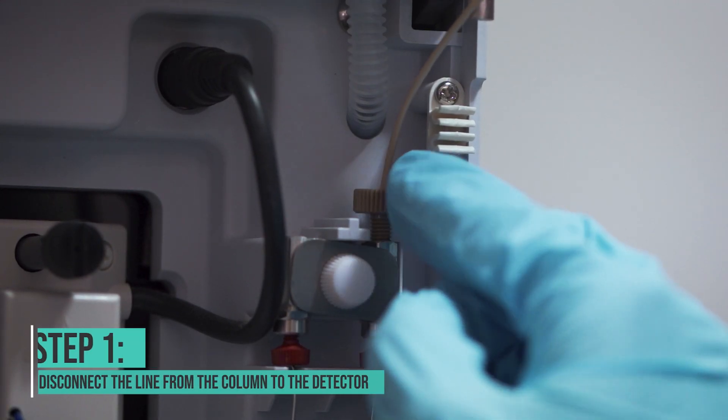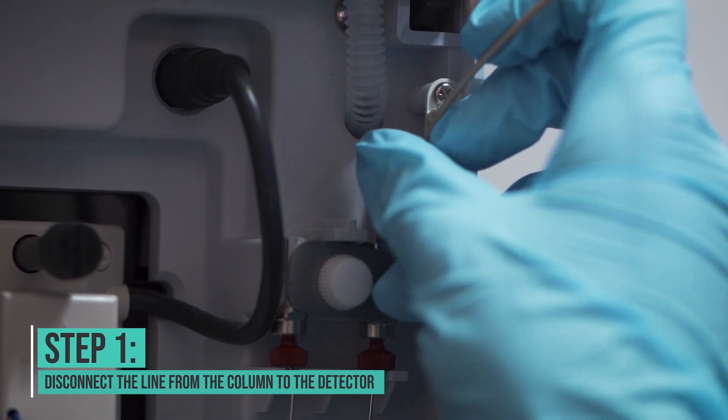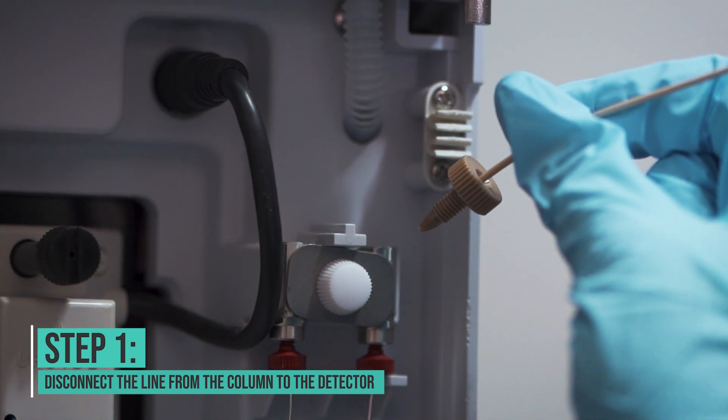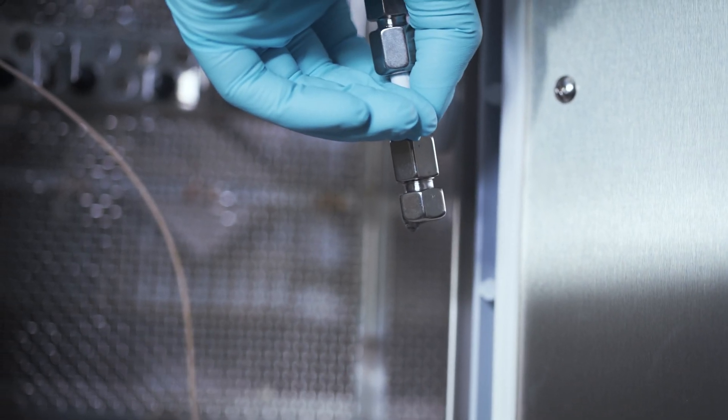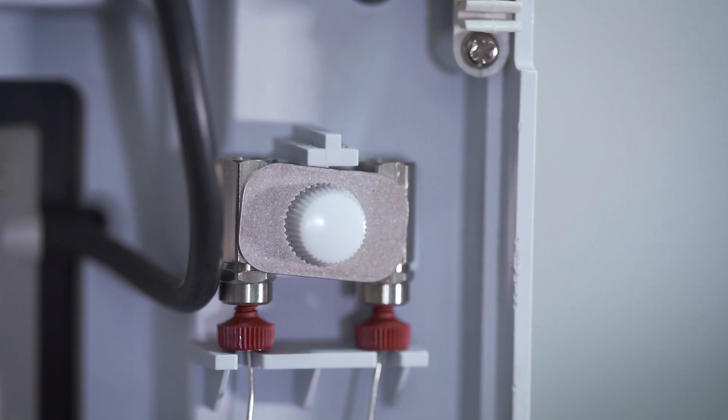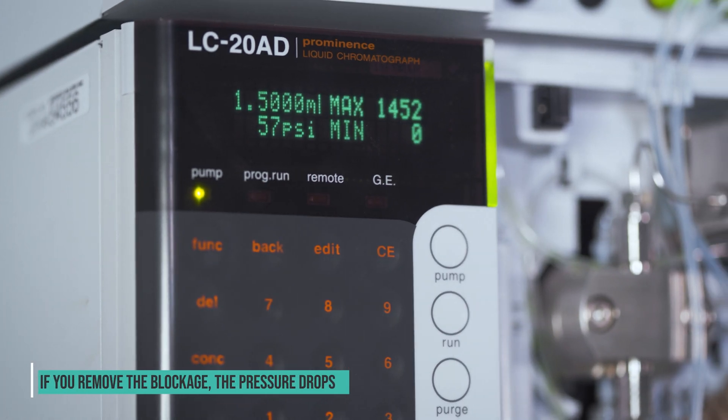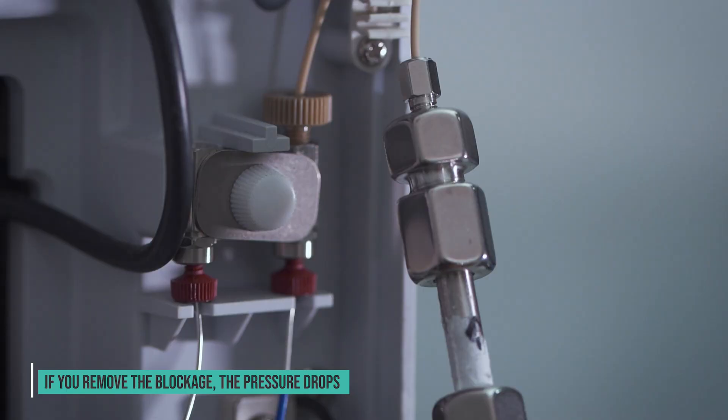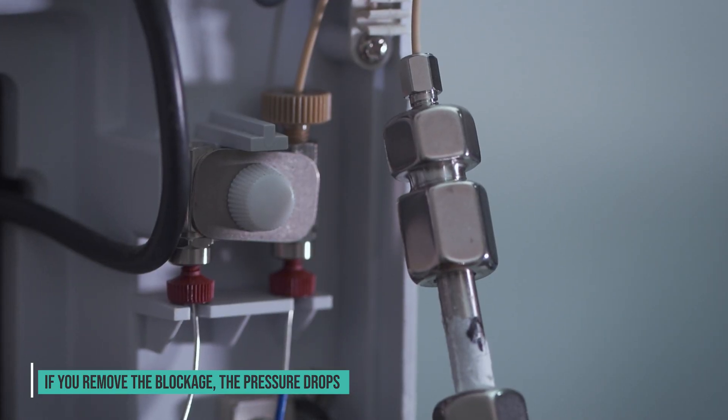The first thing you want to do is disconnect the line going from the column to the detector. If you leak the mobile phase coming out of the column into a beaker rather than the detector and the pressure goes down, then you probably have a clog in the flow cell or something inside the detector.